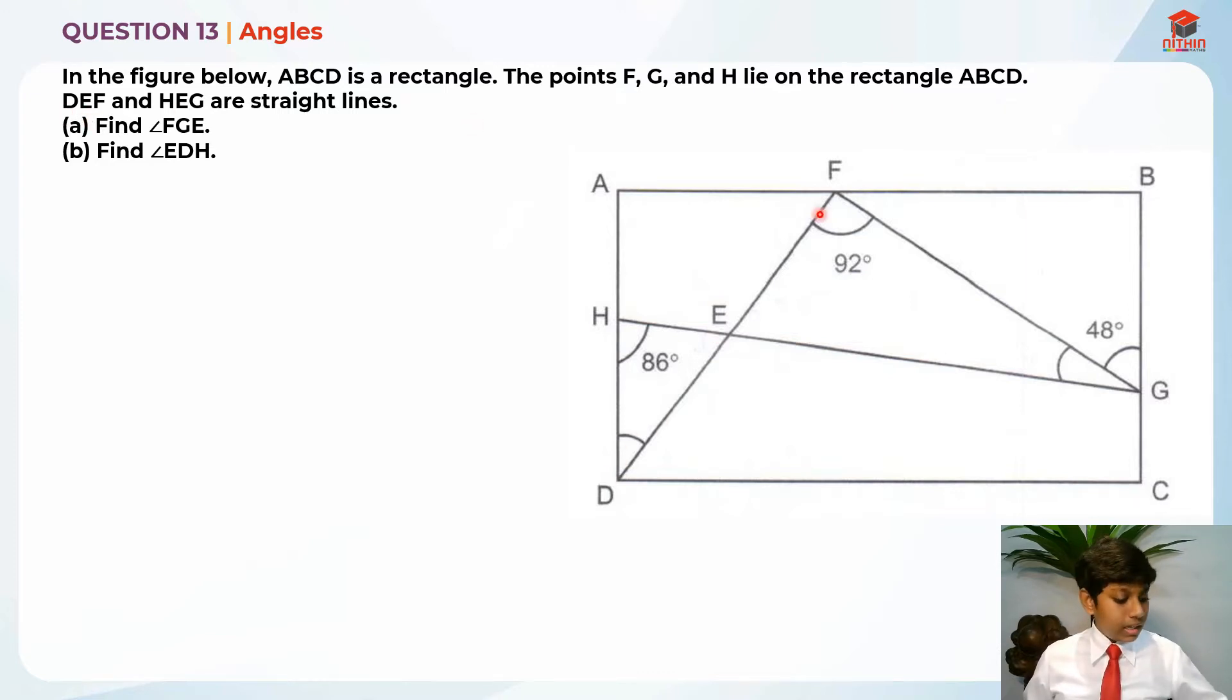DEF, so D, E, F is here and H, E, G are straight lines. Part A, find angle FGE. So where is FGE? It is here, angle FGE. So this is the question and let me highlight some key information. This is a rectangle. Points F, G and H lie on the rectangle. And this is really important. Find angle FGE.